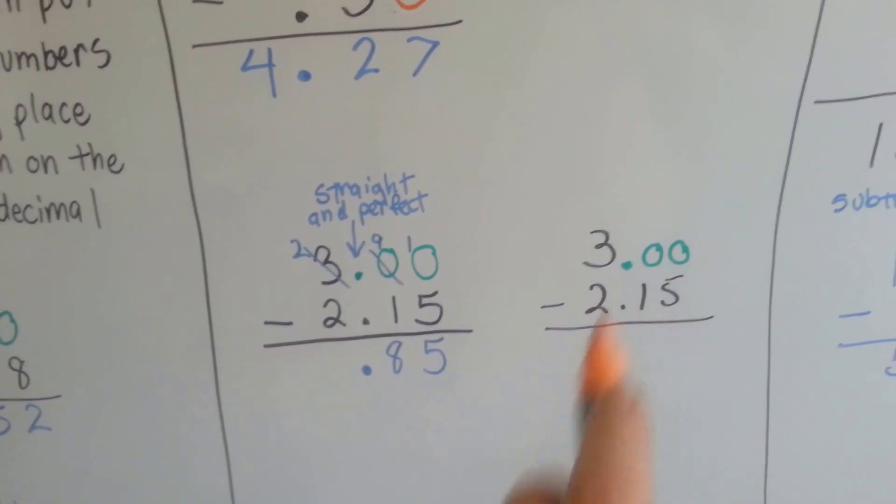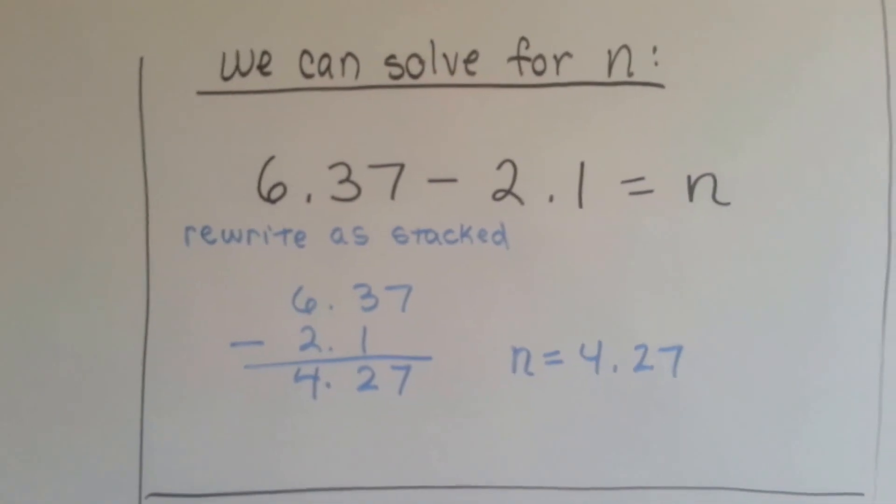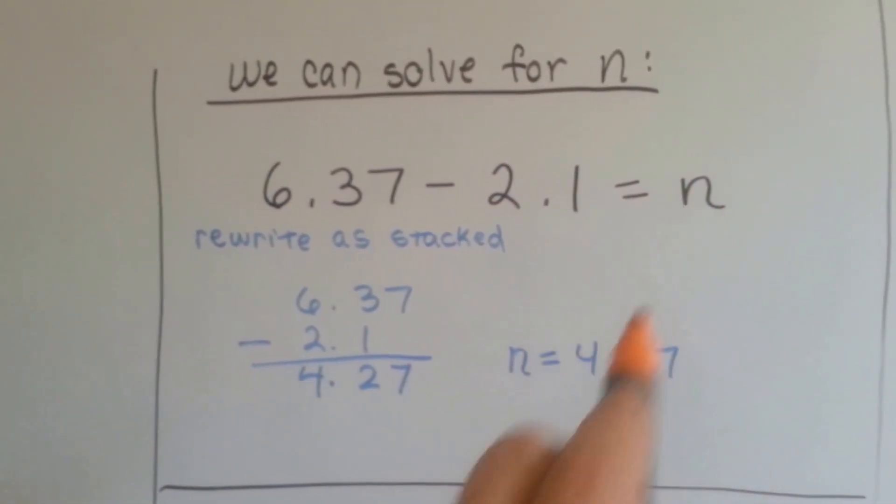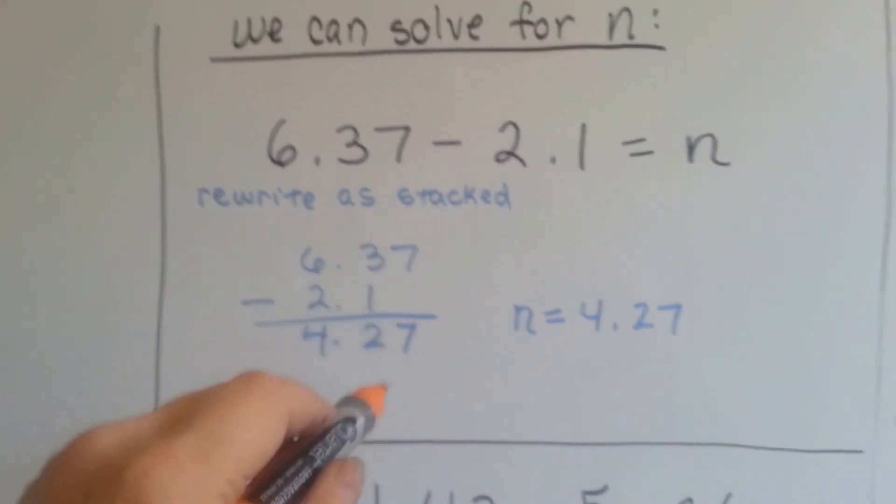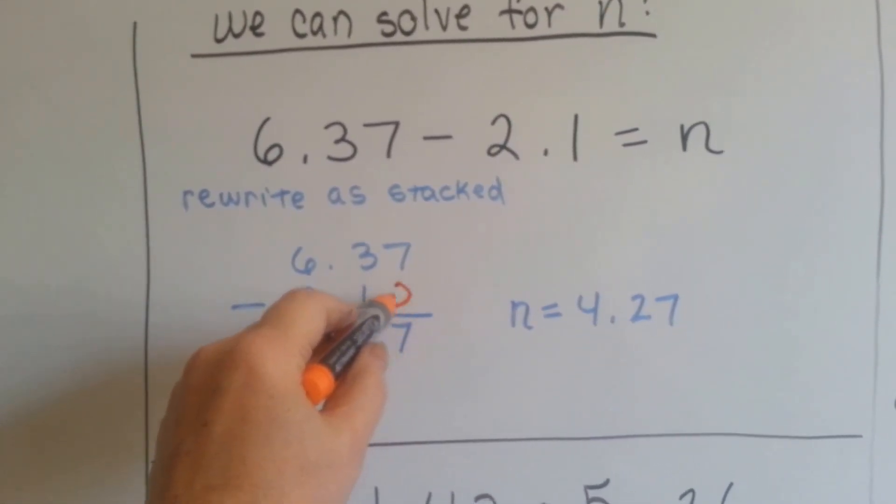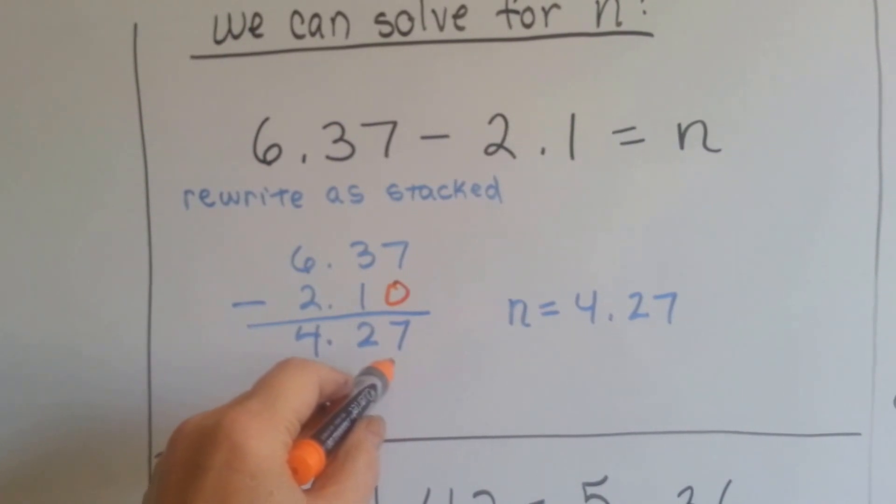We actually added the decimal point and the zeros. We can actually solve for n. If it's written in sentence form, we can rewrite it as stacked and it'll help us solve it. We can add the zero here if we want to. Or we could just drop the 7 down. It's the same thing.